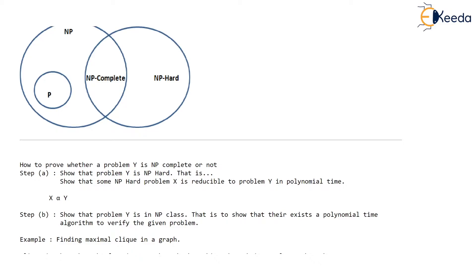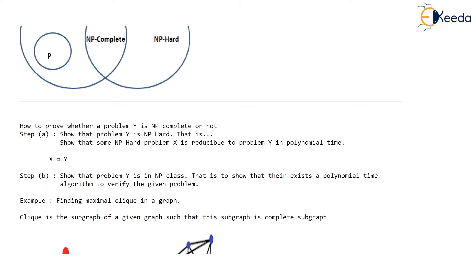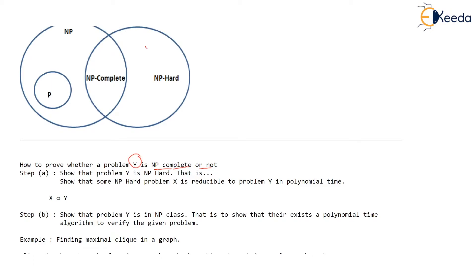How to show a problem Y is NP-complete? We are given some new problem Y and asked to prove whether it is NP-complete or not. There are two steps. First, show that problem Y is NP-hard — show that all the problems in NP are reducible to this problem Y. This is one way of doing it, but it is time-consuming because you would have to take all the problems of NP class and reduce each one to Y.